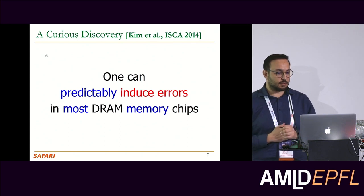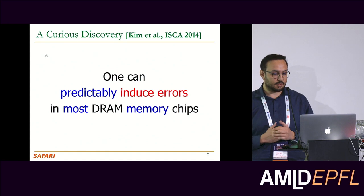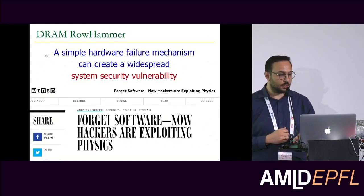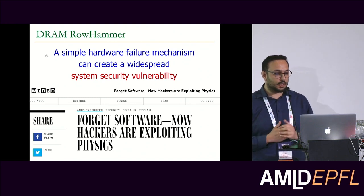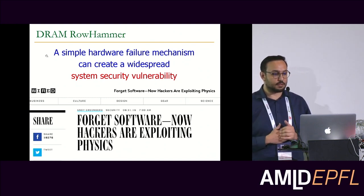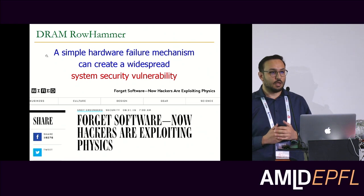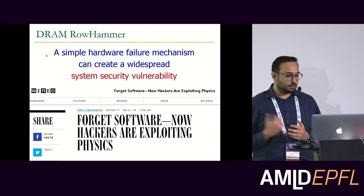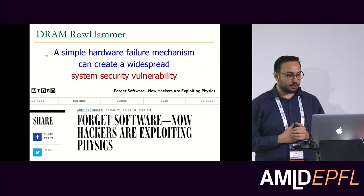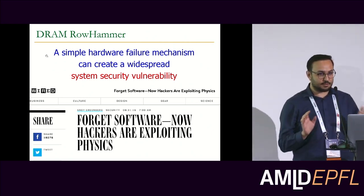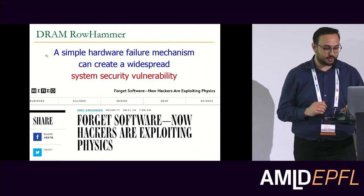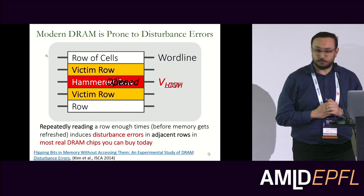By using this Rowhammer vulnerability, it's easy to predictably induce errors in most DRAM memory chips. This simple hardware failure mechanism can create a widespread system security vulnerability because you actually violate memory isolation when you do this. Now you see articles like 'Forget software, now hackers are exploiting physics' — let's not forget about software, but it also means that physics are important.